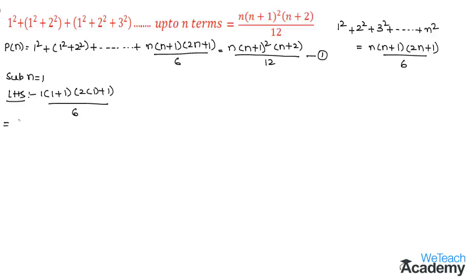This gives 1 × 2 × 3 divided by 6. Since 2 × 3 = 6, we can cancel the numerator and denominator, giving us LHS = 1.